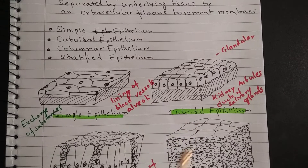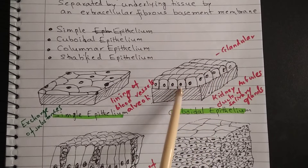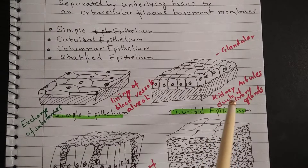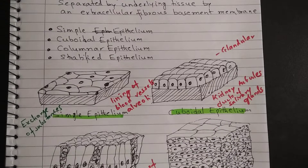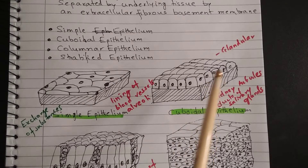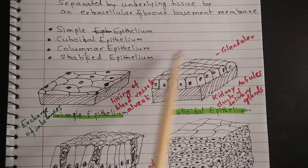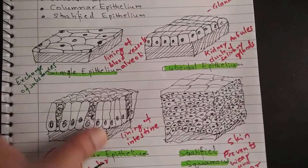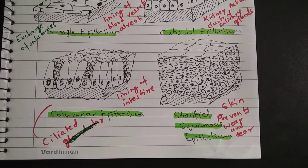The second type is cuboidal epithelium. Here, the cells are cuboidal in shape, sitting on a basement membrane — hence the name cuboidal epithelium. It is found in kidney tubules and in ducts of salivary glands. In some cases, cells of cuboidal epithelium acquire a secretory role, meaning they secrete certain substances. In that case, the tissue is called glandular epithelium, found in endocrine glands like the pancreas or adrenal glands.